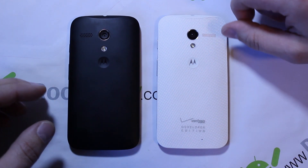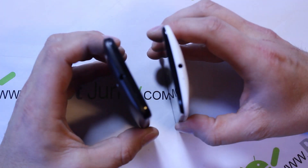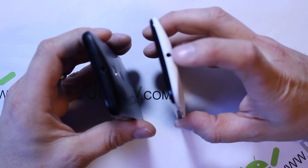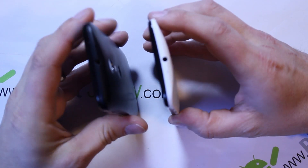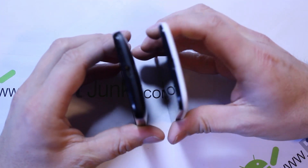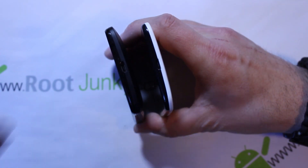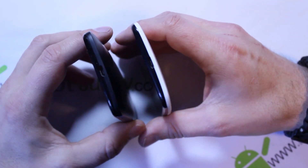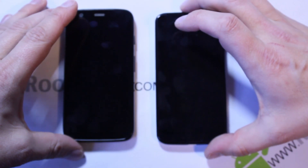Taking a quick look at the top, you can see the speaker hole on the Moto X and the exact same speaker hole on the Moto G. The bottom is the same exact setup on both — you've got your two jacks down there on each device.